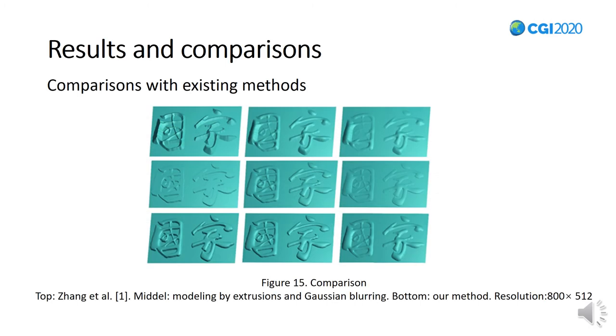We now compare our method with the work of Zhang et al., who generated calligraphy reliefs using Gaussian blurring. As shown in the top row, Zhang et al. constructed an initial height field by defining the height of each pixel as its distance from the stroke border. Then Gaussian blurring with iterations is applied on the height field. One great disadvantage of this method is that the distance computation is very time-consuming.